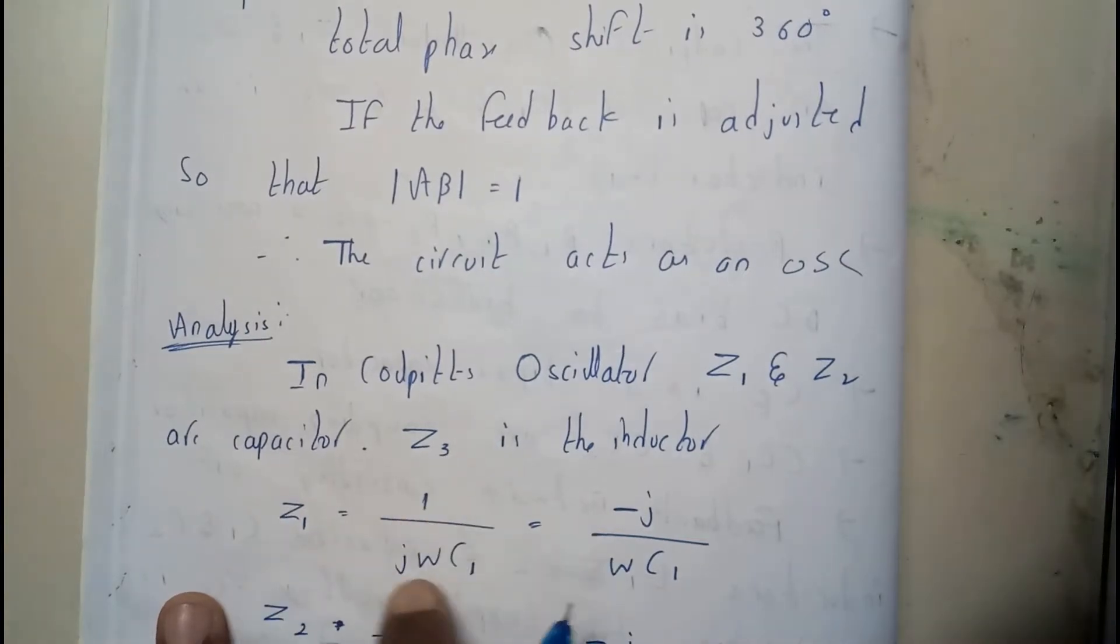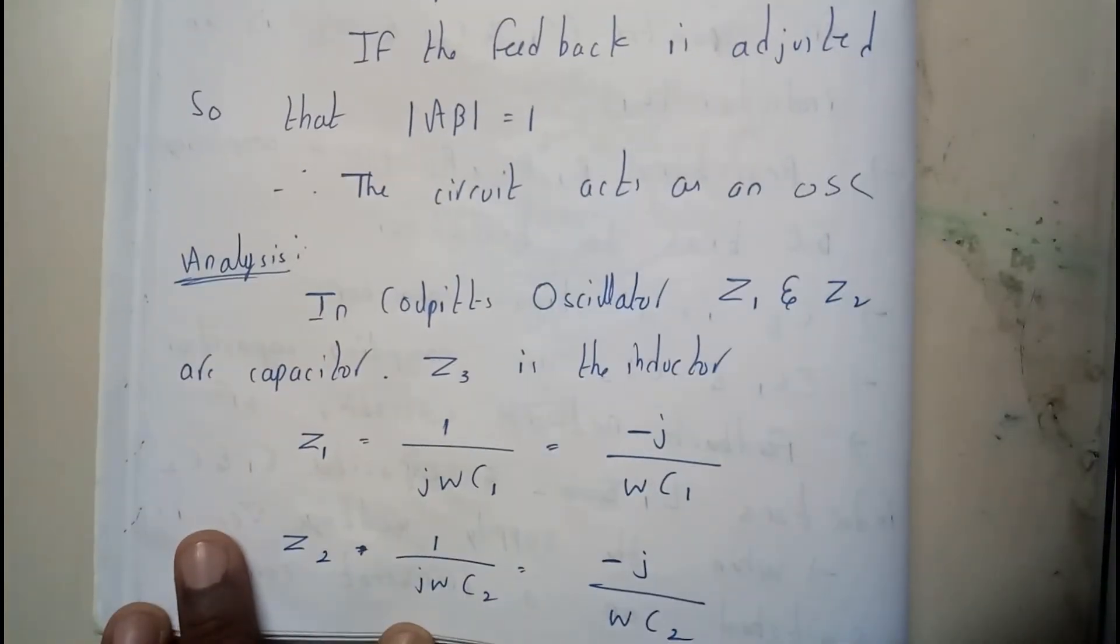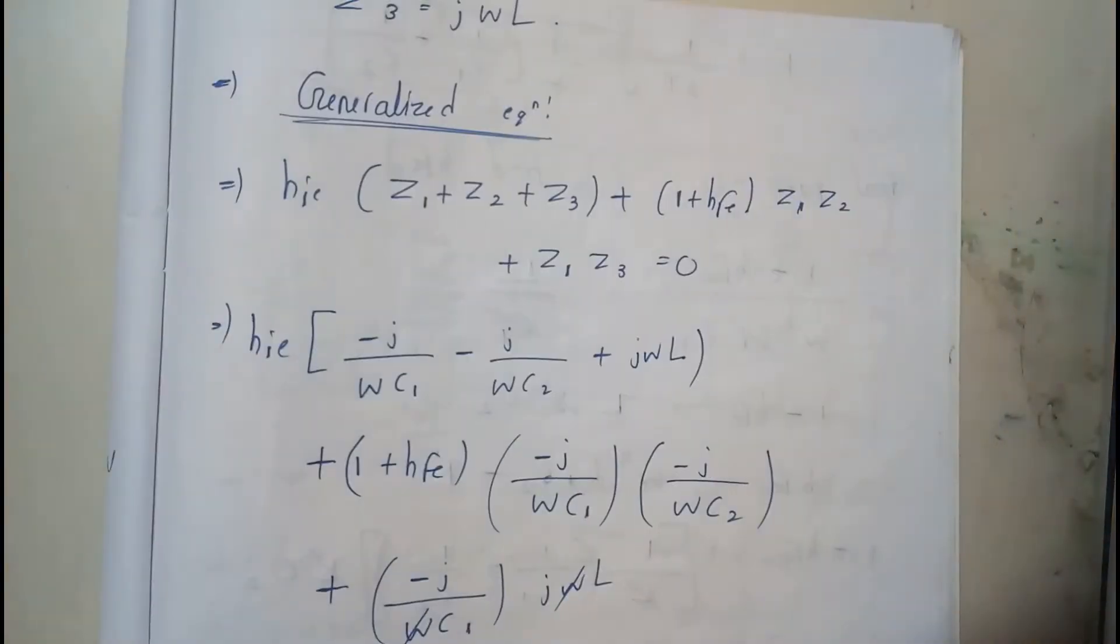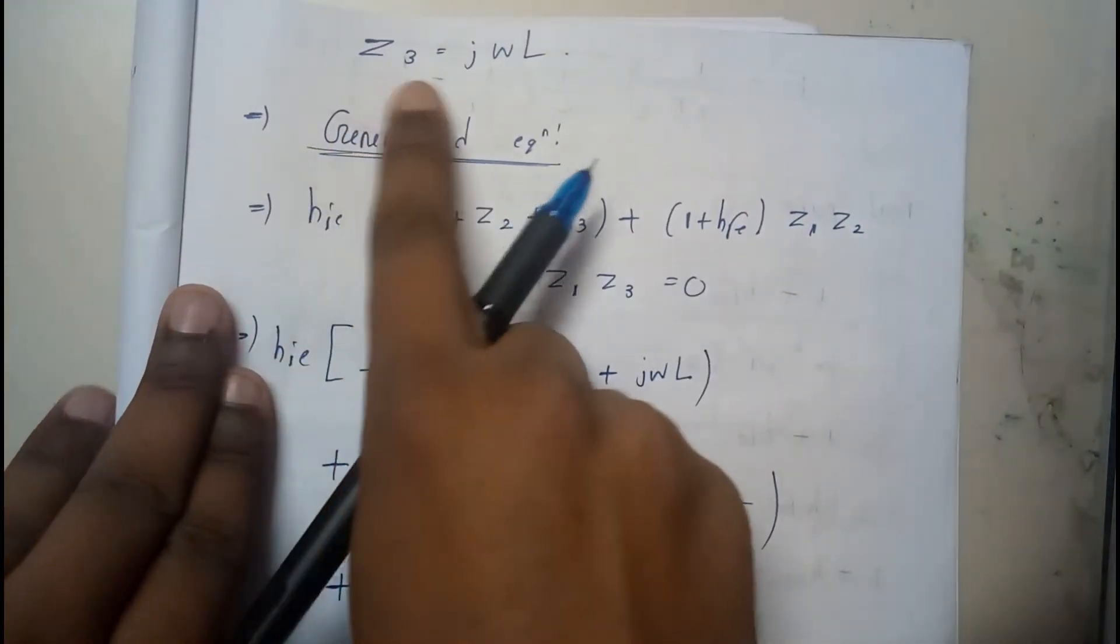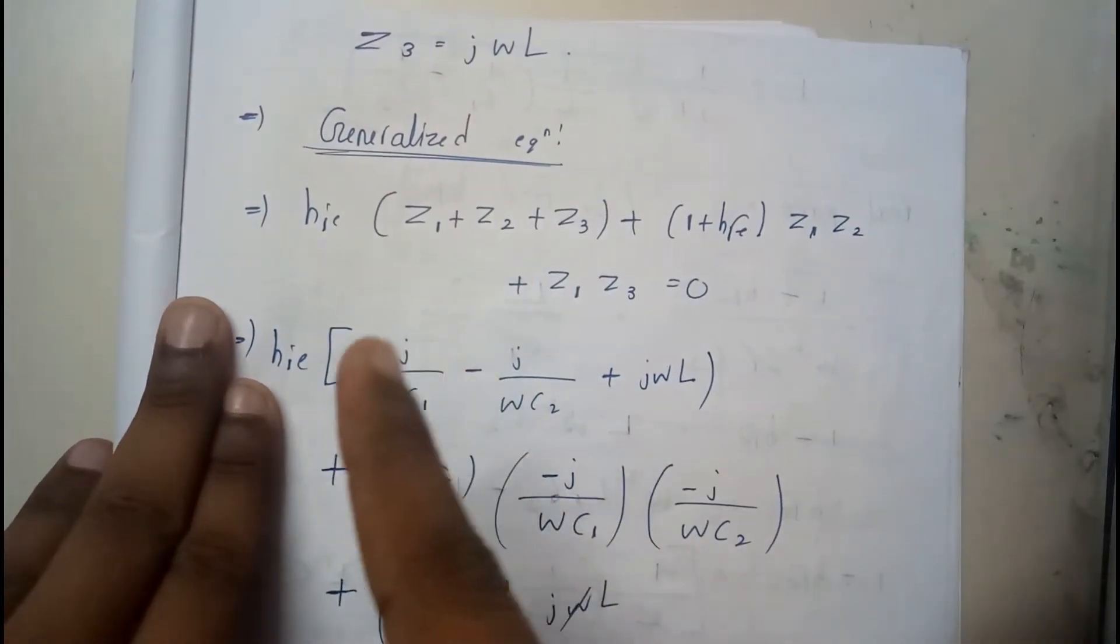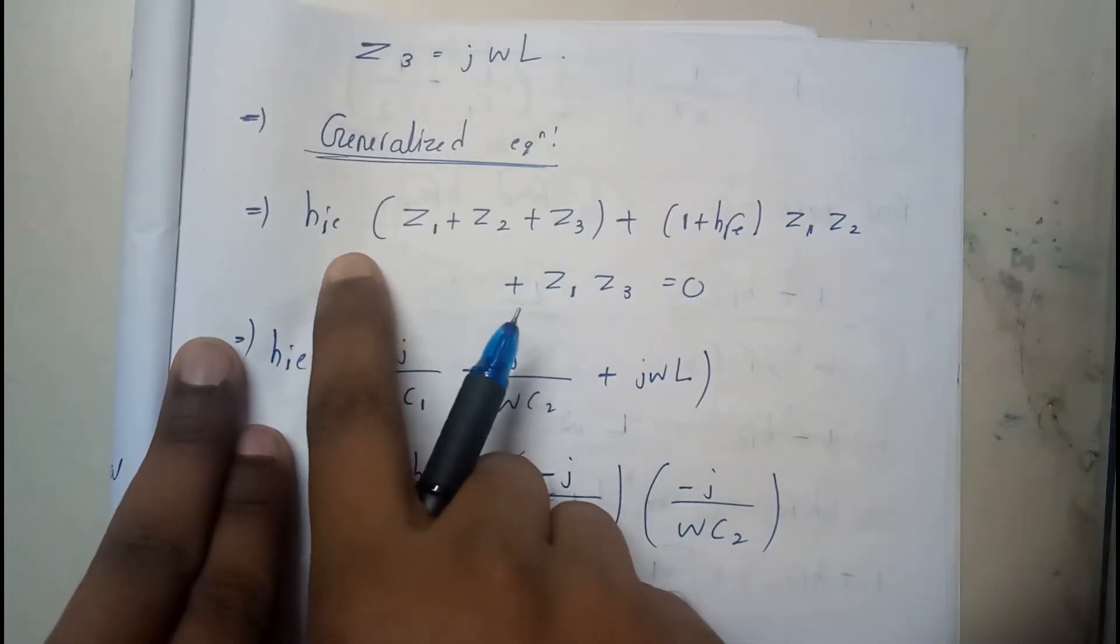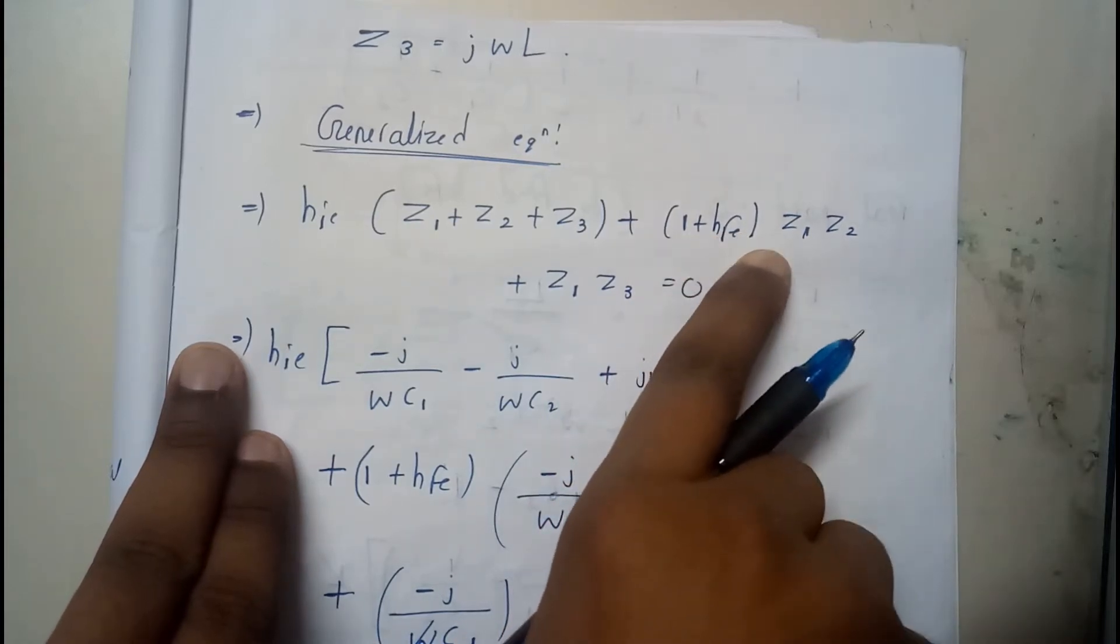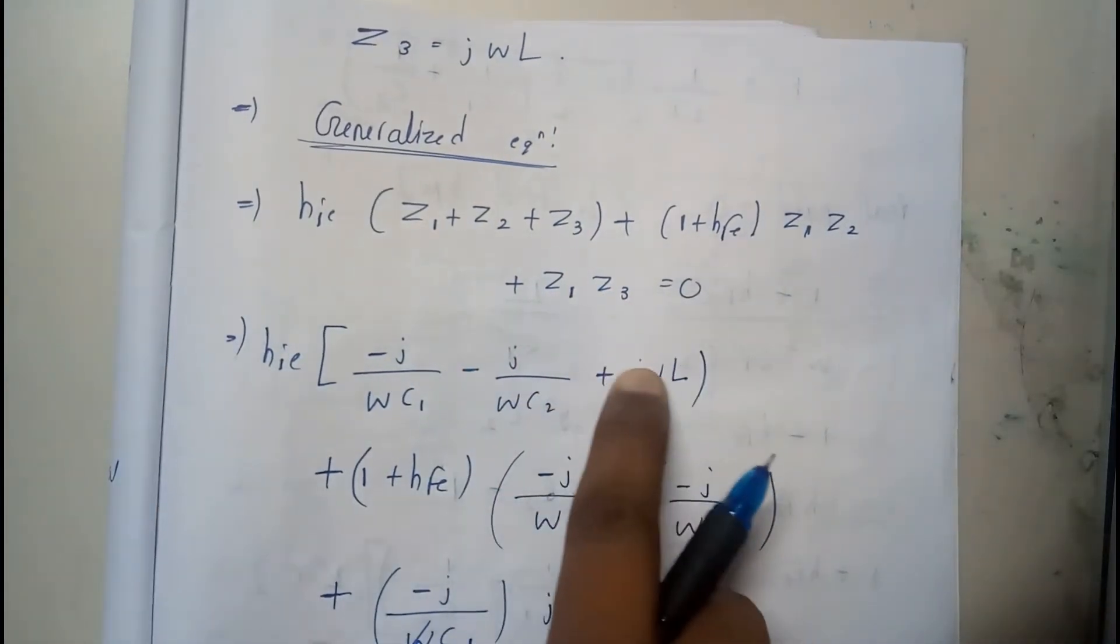So Z1 is nothing but 1 by JWC1. I will be sending J to the numerator minus J by WC1. Z2 is 1 by JWC2, sending J to numerator minus J by WC2. And further moving on, Z3, I have told you that there will be no mutual inductance. So directly JWL, that's it. So we know that generalized equation is nothing but HIE into Z1 plus Z2 plus Z3 plus 1 plus HFE Z1, Z2 plus Z2, Z3 is equals to 0.